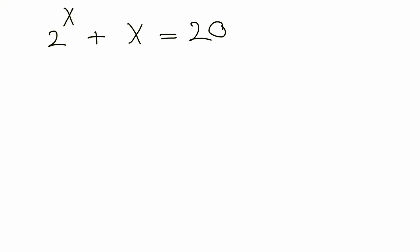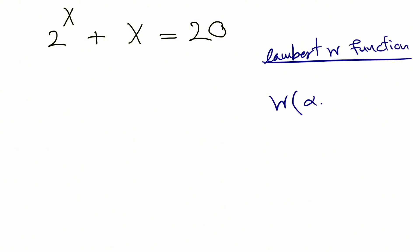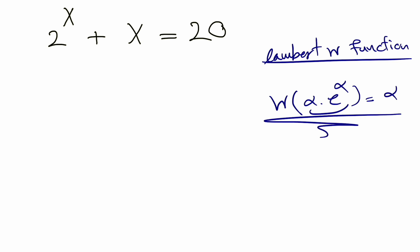What the Lambert W function says is: when we plug in alpha times e to the power of alpha into the Lambert function, we get alpha. That's the main message of the Lambert function, also called the product log function. Let's see how we can use this to solve our question.